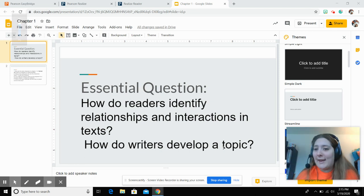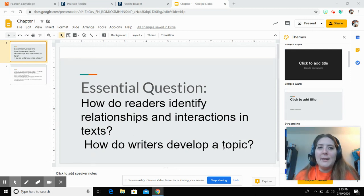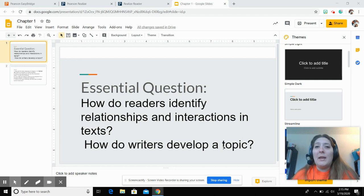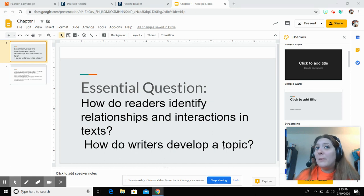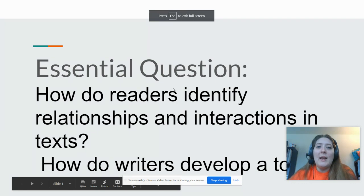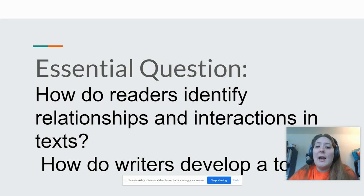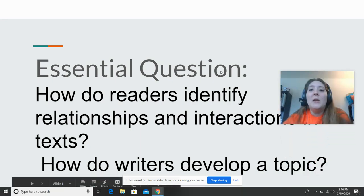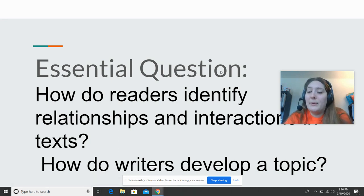Hi kiddos, this is Mrs. Weaver. I am a fifth grade language arts teacher at the intermediate school. If you haven't seen me around, I'm pretty hidden in a corner. I'm going to read with you today chapter one of 'Washed Up.' If you are receiving this, make sure you are following along. We're going to have the words up on the screen so you can follow along as we read. You should also have your Cornell notes. Our essential questions today are: how do readers identify relationships and interactions in text, and how do writers develop a topic?